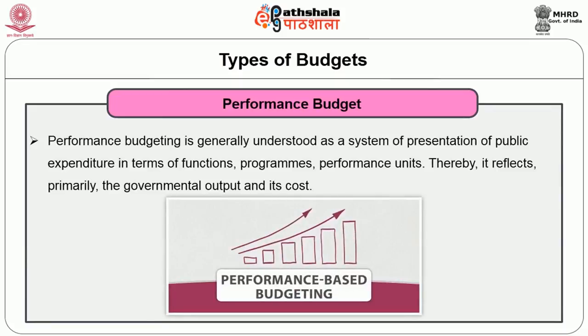Eighth, Performance Budget — performance budgeting is generally understood as a system of presentation of public expenditure in terms of functions, programs, and performance units, reflecting primarily the governmental output and its cost. The main emphasis of performance budgeting is on developing management tools such as work measurement, performance standards, etc., with a view to improve the performance of the management by relating output to the cost. The main steps in performance budgeting are classification of public expenditure in terms of functions, sub-functions, programs, projects, etc.; the establishment, improvement and extension of activity schedules for all measurable items of the government; the establishment of work output, employee utilization, standard or unit costs by objective methods; and the creation of related cost and performance recording and reporting systems.